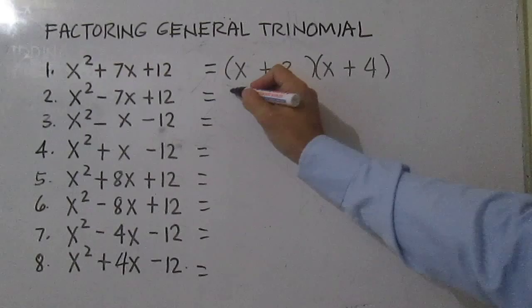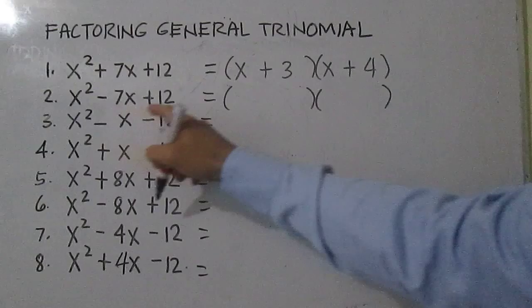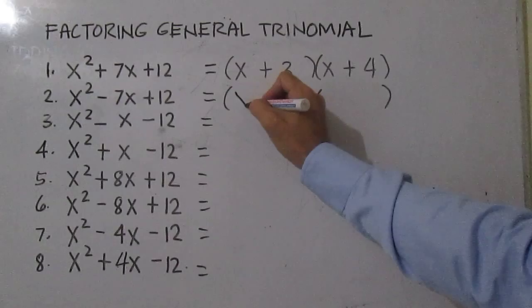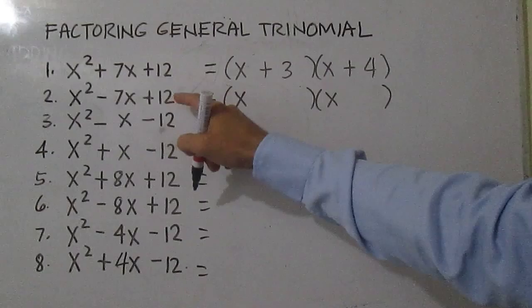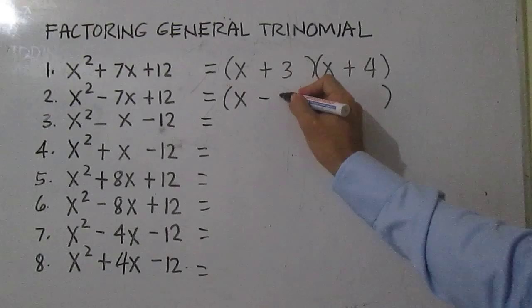For number 2, factor the first term and the third term. X squared is just X times X. Then think of two numbers that give you a product of 12 and a sum of negative 7. This time you have negative 3 and negative 4 as factors of 12.